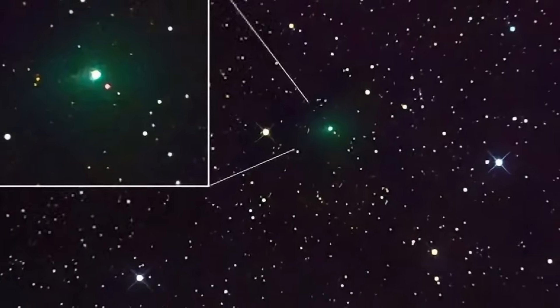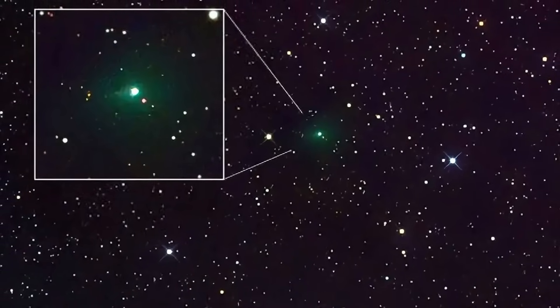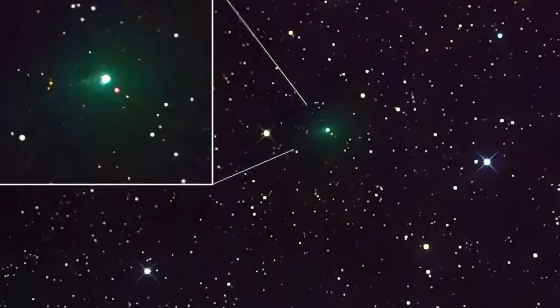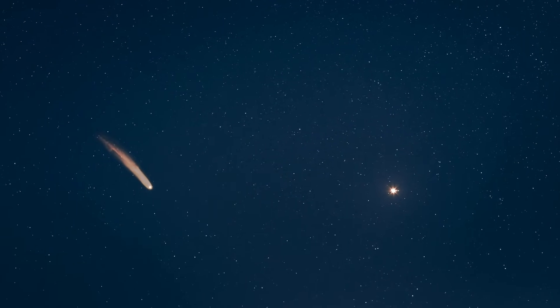But time is slipping away for those who would study it. On October 21st, Three-Eye Atlas will pass behind the sun from Earth's perspective, entering superior conjunction. For weeks, it will be invisible, lost in the blinding glare of the solar disk.